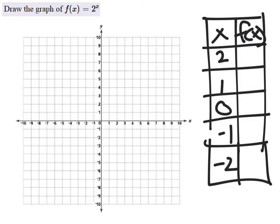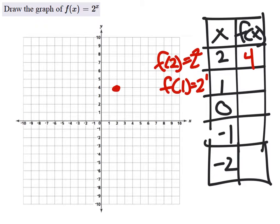So f of 2 would be 2 to the power of 2, which is 4, and that would give us the point (2, 4). And f of 1 would be 2 to the power of 1, which is 2.